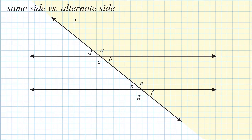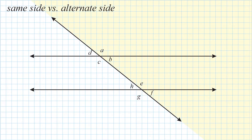What is an alternate angle? Let's look at angles A and G. They are alternate angles because one is located in the shaded region and one is not, so they are on alternate sides of our transversal. We could also say angles D and F are alternate angles, and angles H and A are alternate angles. Now that we know the difference between interior and exterior and same side versus alternate side, we're going to merge these concepts to identify different types of angles.